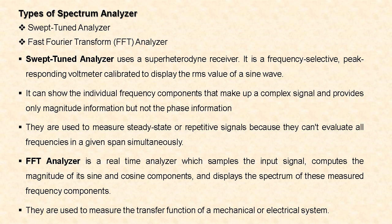Now let us see the types of spectrum analyzer. There are two main types: swept-tuned analyzer and Fast Fourier Transform (FFT) analyzer. The swept-tuned analyzer is also called a super-heterodyne analyzer. It uses a super-heterodyne receiver and is a frequency-selective, peak-responding voltmeter calibrated to display the RMS value of a sine wave. It can show individual frequency components of a complex signal but provides only magnitude information, not phase. Swept-tuned analyzers are used for steady-state or repetitive signals — they are non-real-time analyzers.